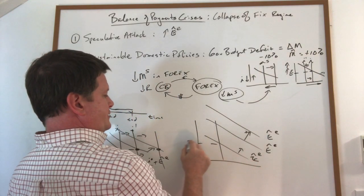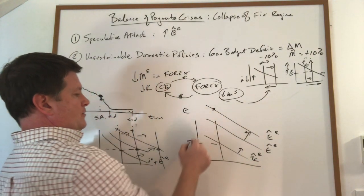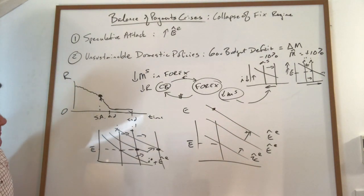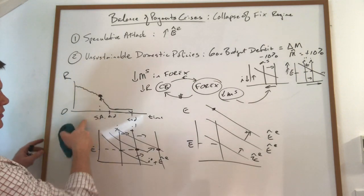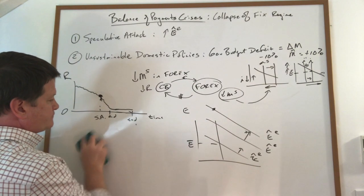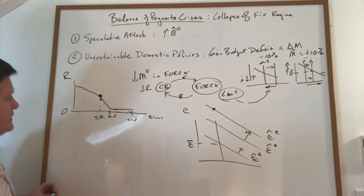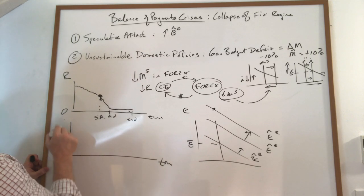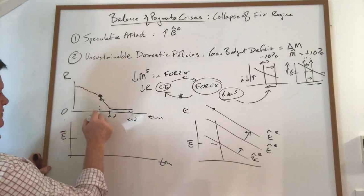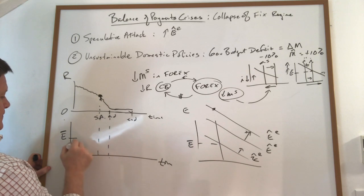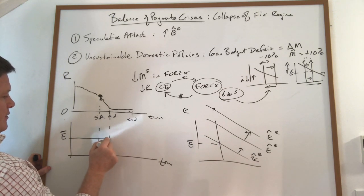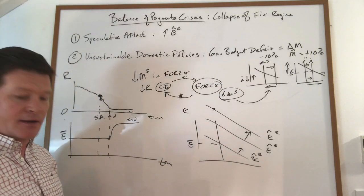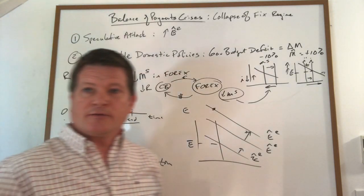The exchange rate goes from its old fixed value way up. So if I were to put a time path of the exchange rate just below this, it would look like this: fixed all the way until the end, and then it shoots up like that. You see a lot of real examples of that in the real world.